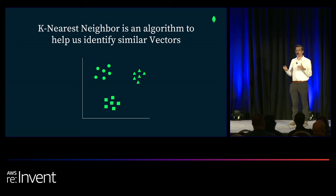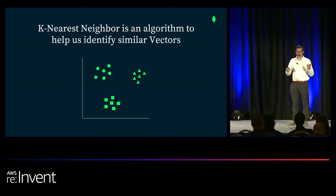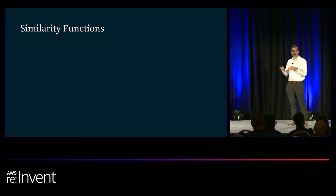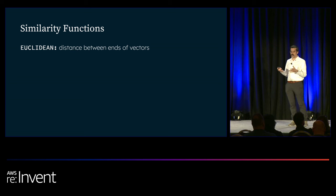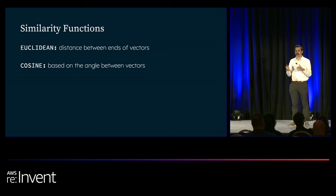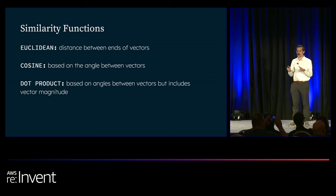At query time, you need to define how you are measuring distance. Alongside k-nearest neighbors is the distance function you'll choose. Inside Atlas Vector Search, we support three different similarity functions — the primary ones being used today. The first is Euclidean, which is the distance between the ends of vectors. The second is cosine, which is based on the angle between vectors. The third is dot product, which is based on the angles between vectors but also includes the vector magnitude.